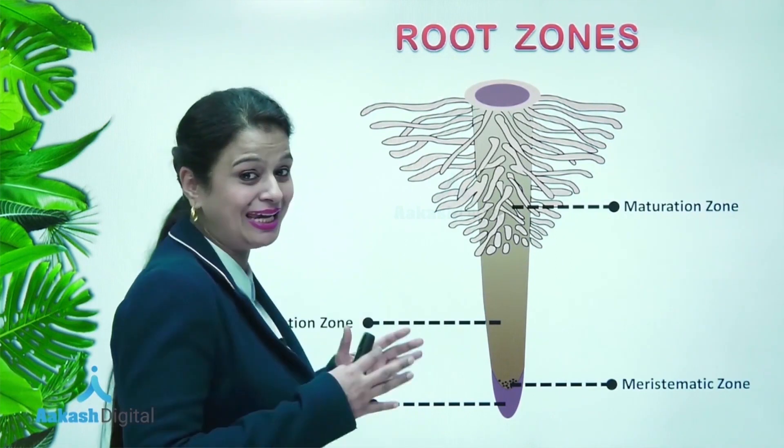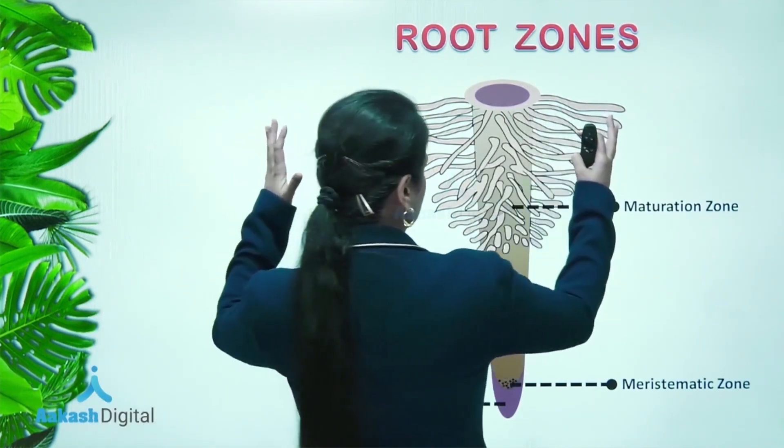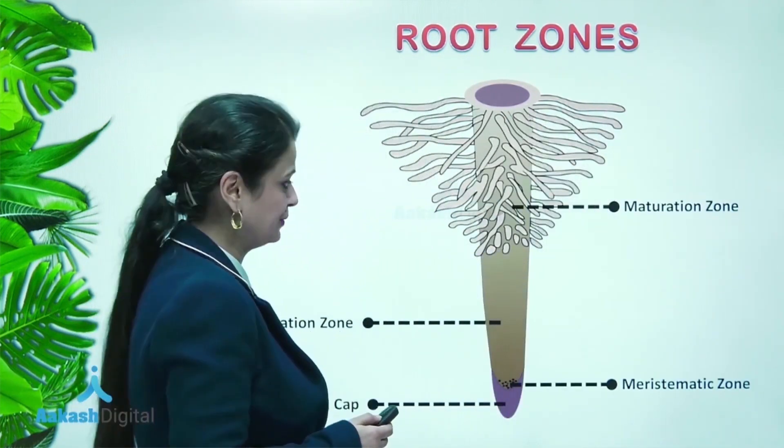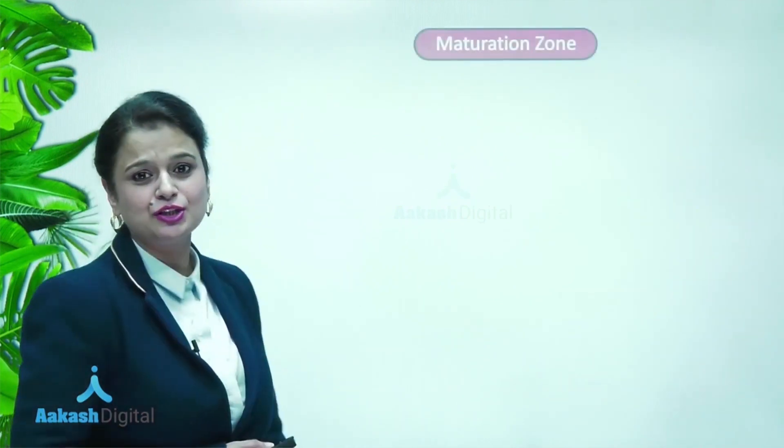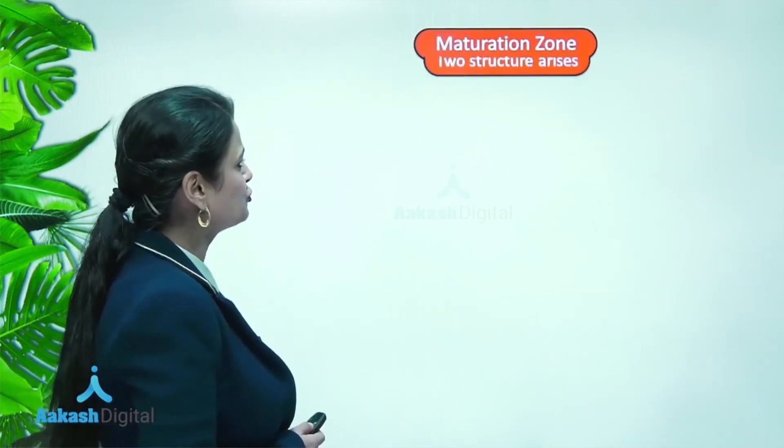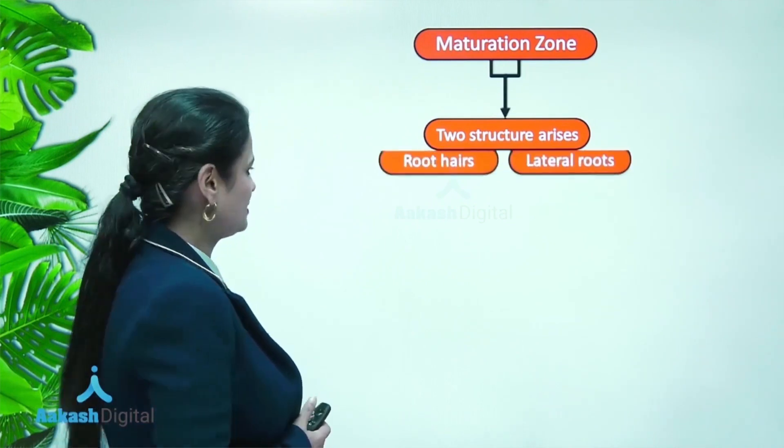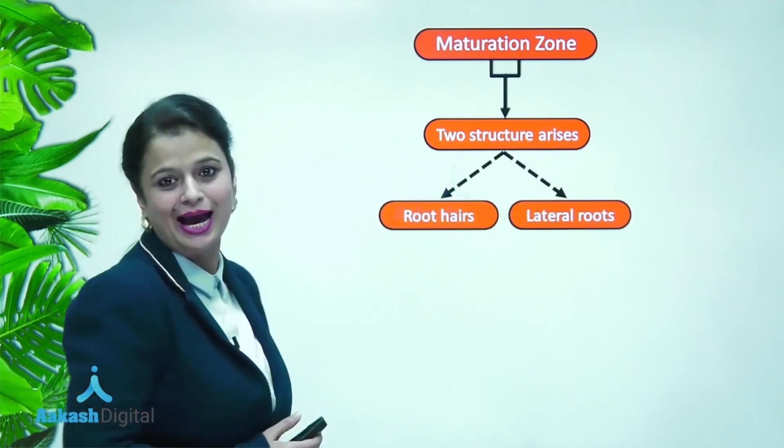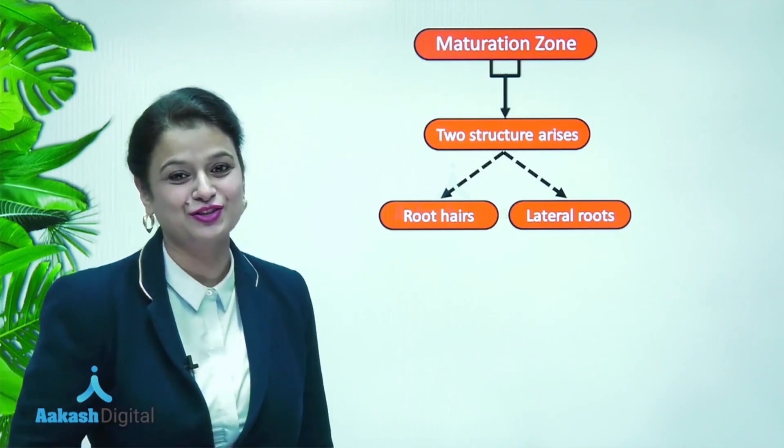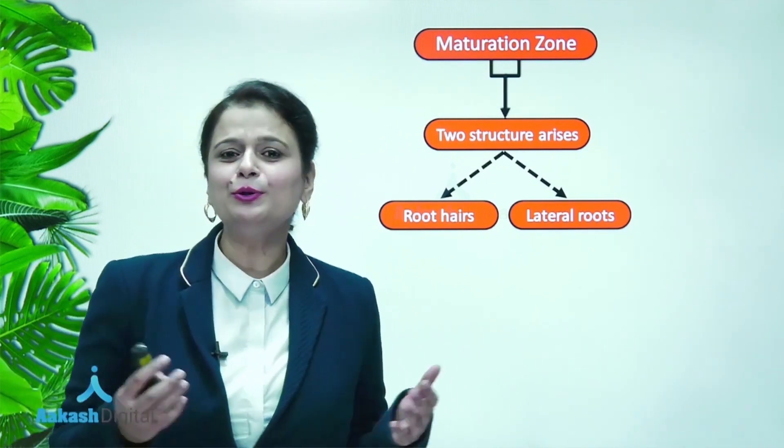So now it is time to talk in detail about this zone, that is maturation zone. Now, maturation zone gives rise to two structures - that is root hairs and lateral roots.